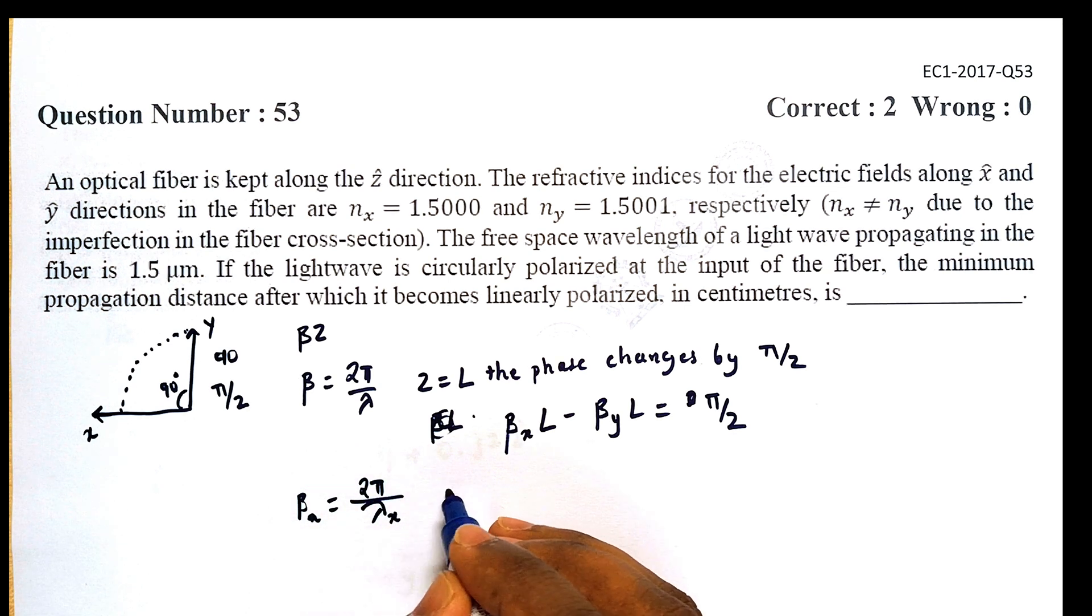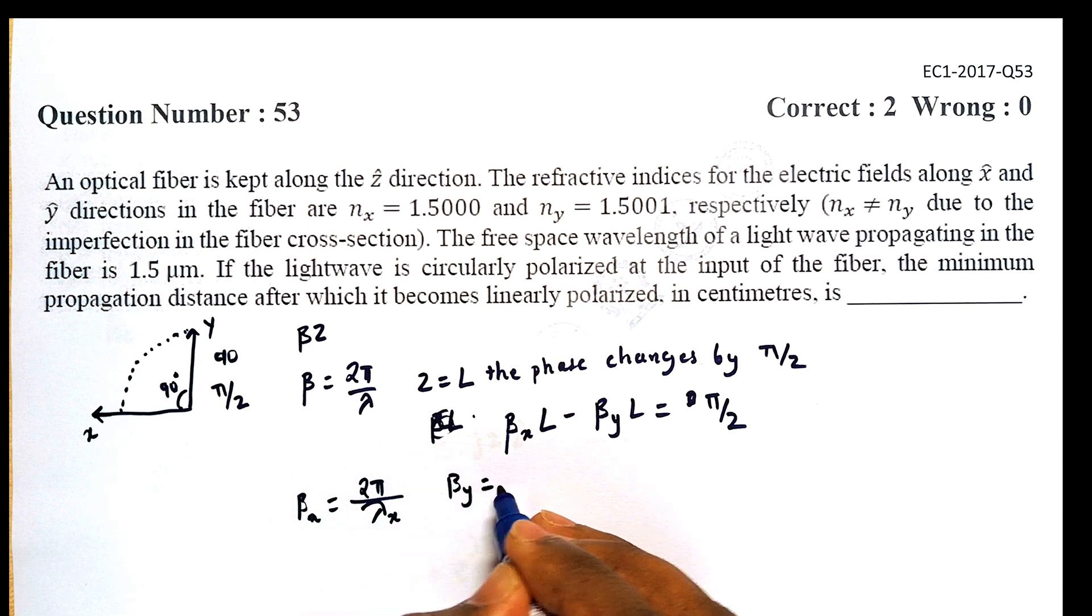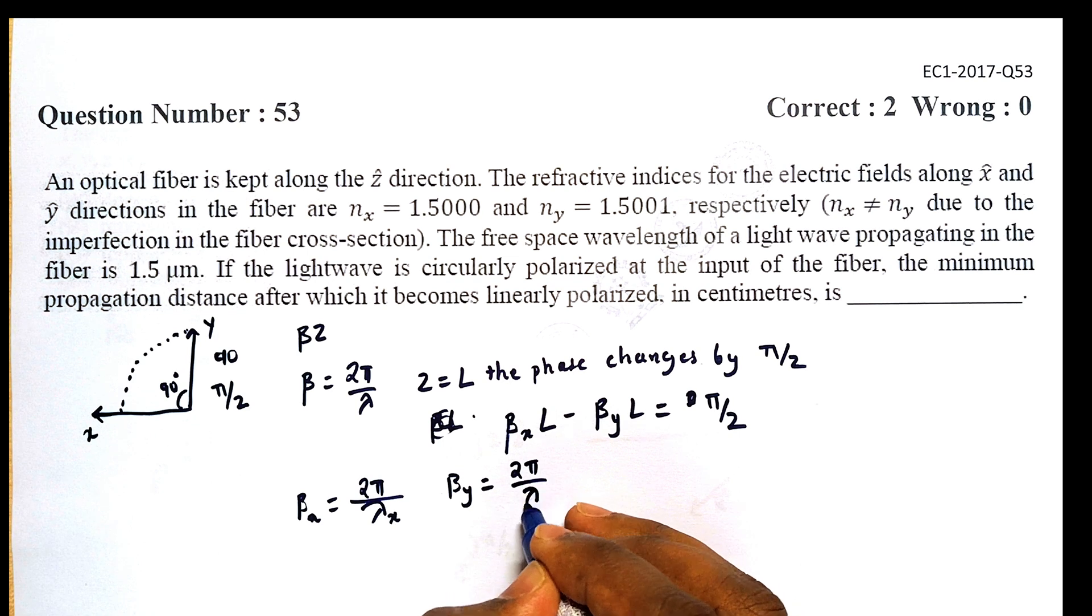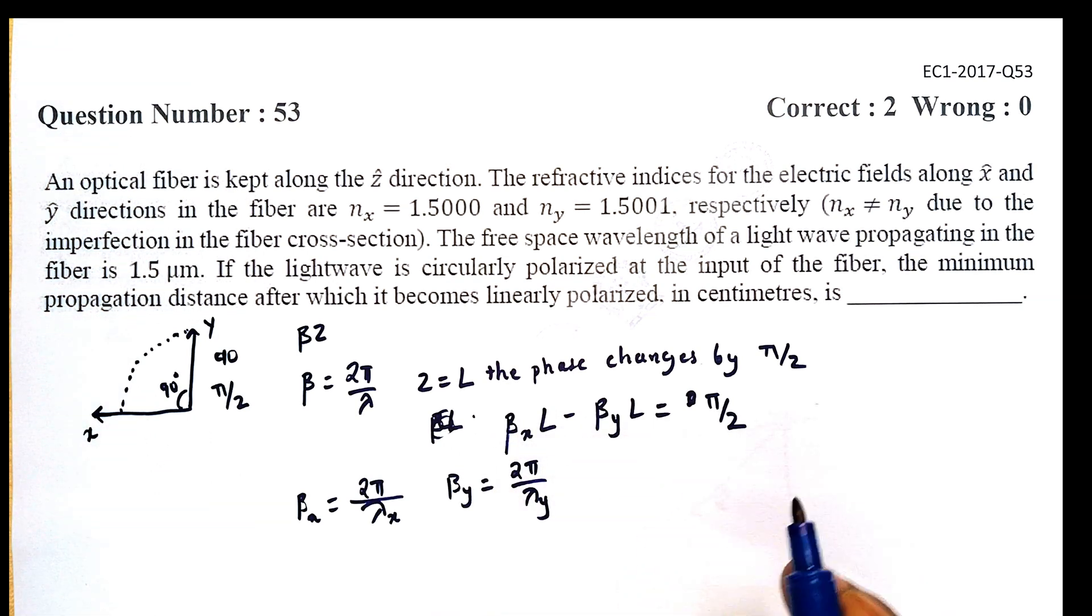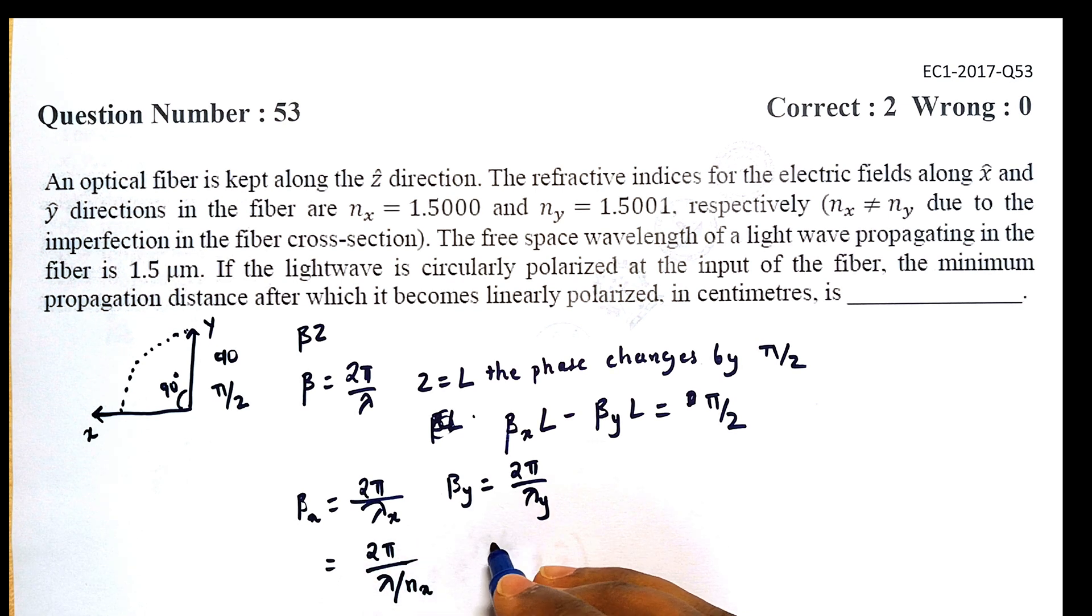Or we can also say that β_x = 2π·n_x/λ, and β_y = 2π·n_y/λ.